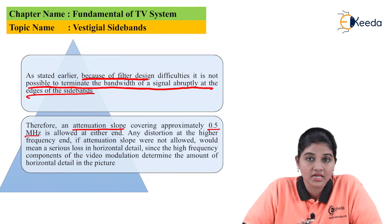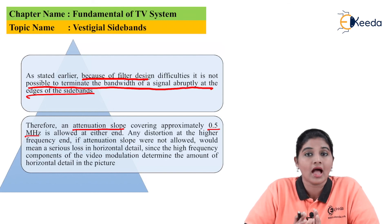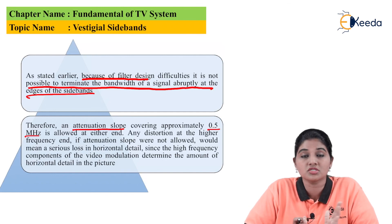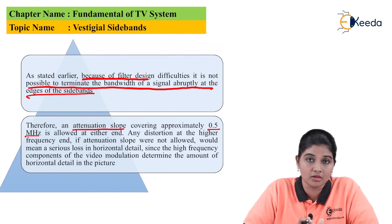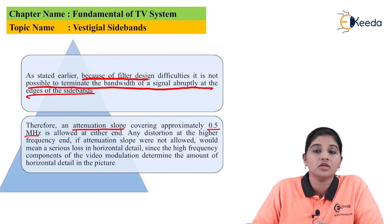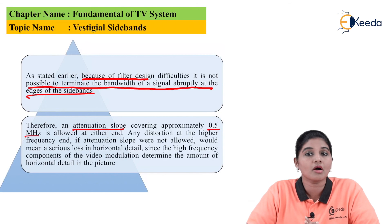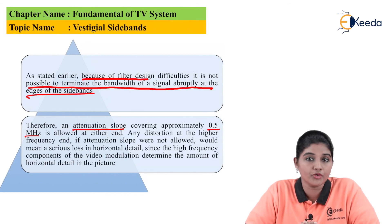So this is what vestigial sideband transmission is — it consists of the full upper sideband along with some unsuppressed part of the lower sideband and the carrier frequency. Vestigial sideband exists because it is not possible to suppress one complete lower sideband, as the low frequency components in the video signal carry important information, and suppressing them would result in a damaged picture on the screen. I hope you understand this topic — thank you very much for watching this video.